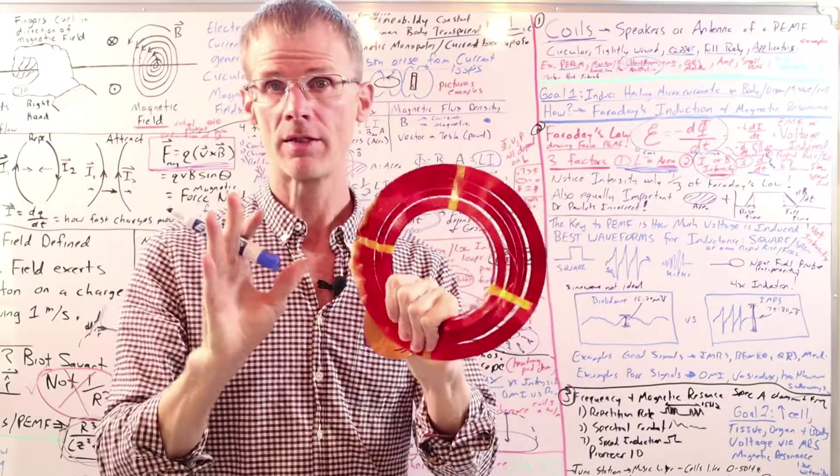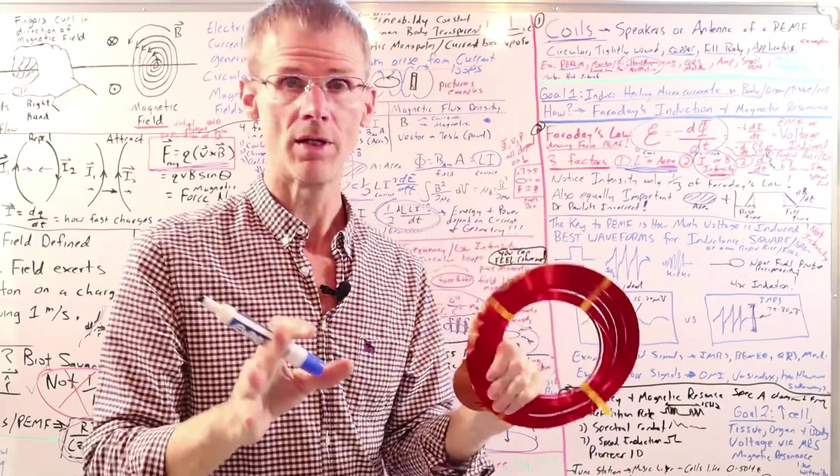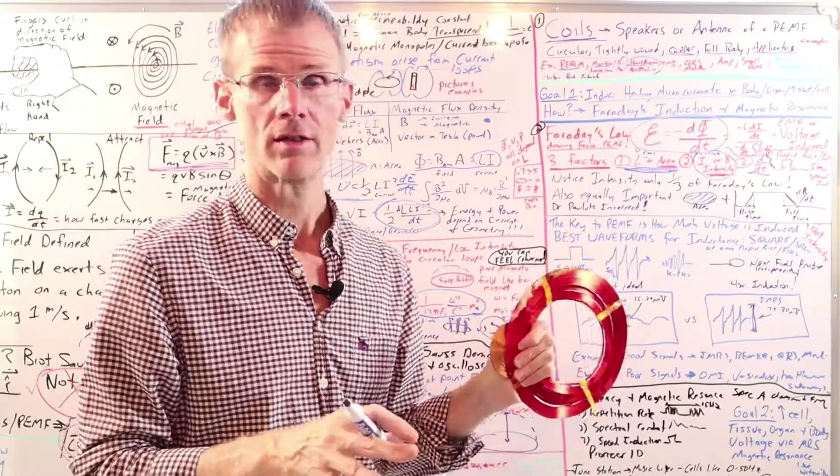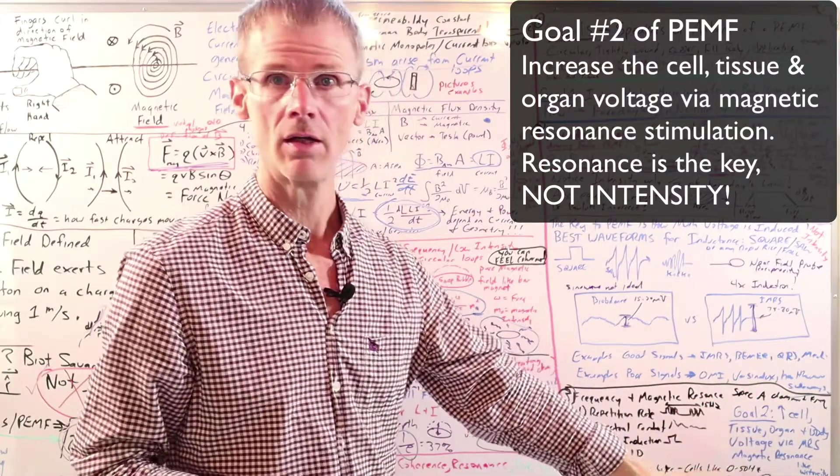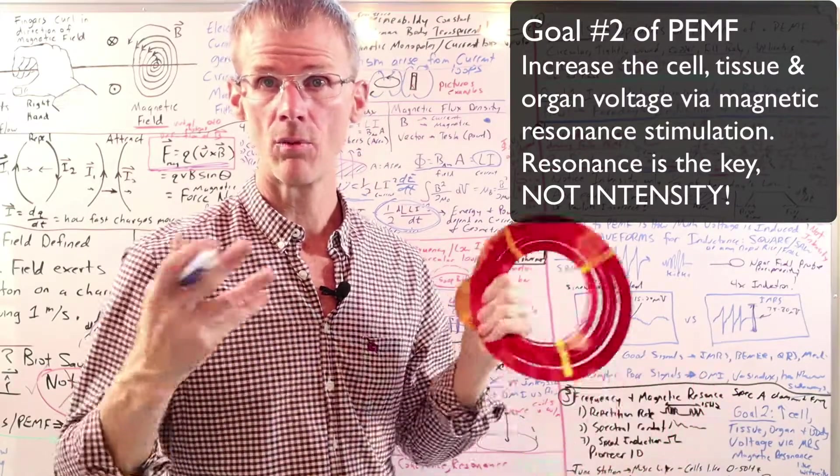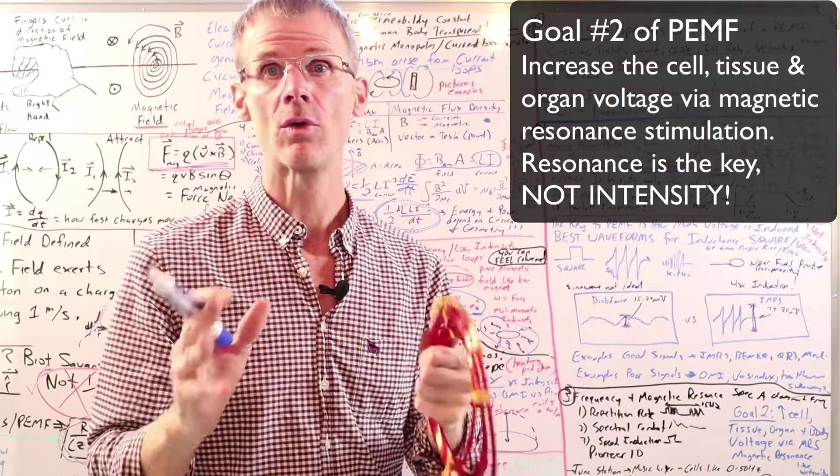So now this video is more about magnetic field intensity, but I just want to mention in closing that resonance is the second goal of PEMF. So I would say the second goal is to increase cell, tissue, organ, and body-wide voltage via magnetic resonance.